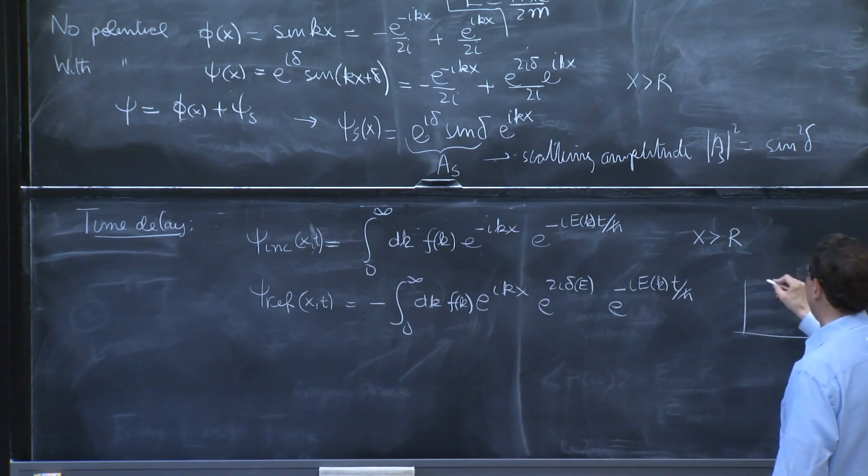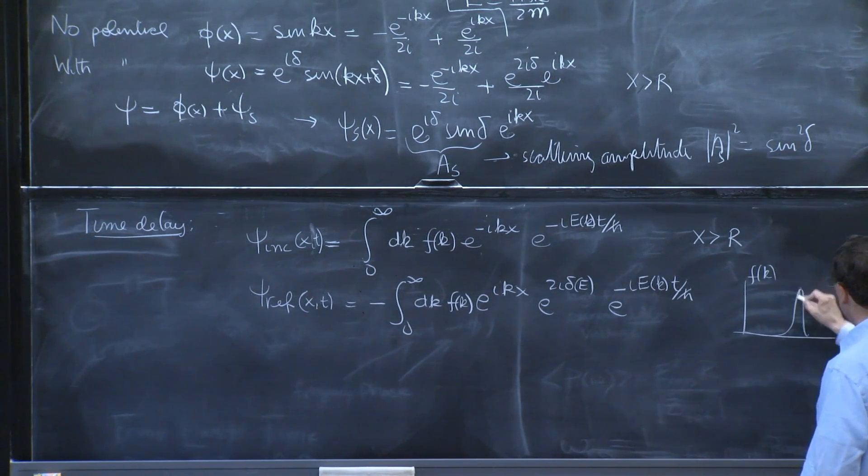So I should put a minus 0 to infinity dk f of k. And we'll have the e to the minus i e of k t over h bar. And just for reference, f of k is some real function that peaks at some value of k0.